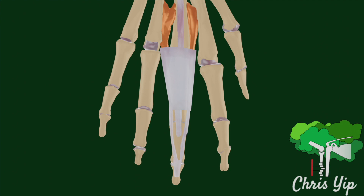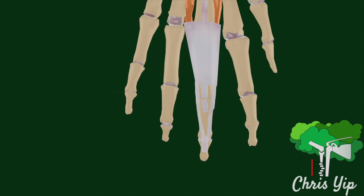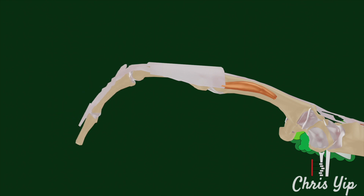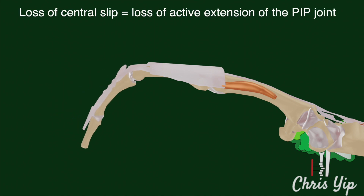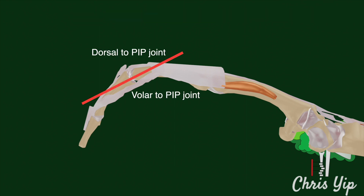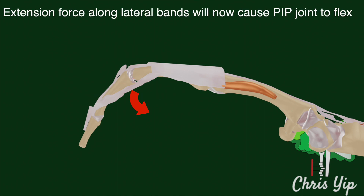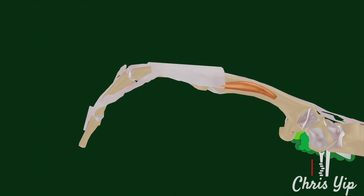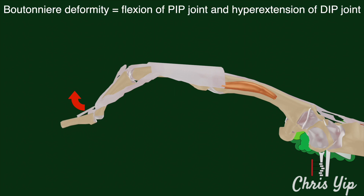A boutonnière deformity results from a loss of the extensor mechanism at the central slip. Initially, there will be a flexion deformity of the proximal interphalangeal joint, but since the balance of the finger extensor mechanism is altered, over time it can lead to the fixed volar subluxation of the lateral bands. As the lateral bands are now volar relative to the proximal interphalangeal joint, this not only leads to a greater flexion force on the proximal interphalangeal joint, but also to a hyperextension of the distal interphalangeal joint.